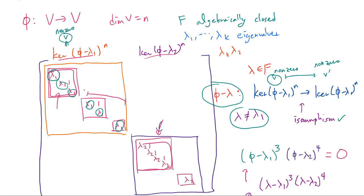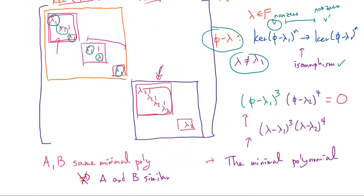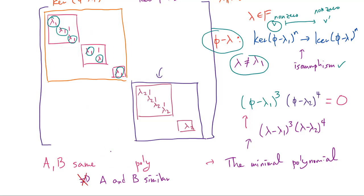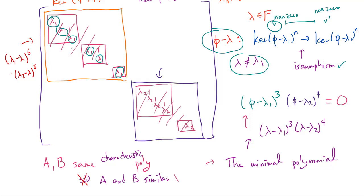This is the smallest possible polynomial that makes any non-zero vector in V disappear when applied — in other words, it evaluates to the zero map. When we swap phi for a variable lambda, we write (lambda minus lambda_1)^3 times (lambda minus lambda_2)^4; this monic polynomial is called the minimal polynomial. This shows that if A and B have the same minimal polynomial, A and B do not have to be similar — the minimal polynomial only captures the largest Jordan block in each generalized eigenspace, not the sizes of the smaller blocks. For example, A may have partition 3+2+1 while B has 3+1+1+1, making them non-similar. Similarly, having the same characteristic polynomial is not enough for similarity, since the characteristic polynomial only tells us the total sizes of each generalized eigenspace, not the internal partition.